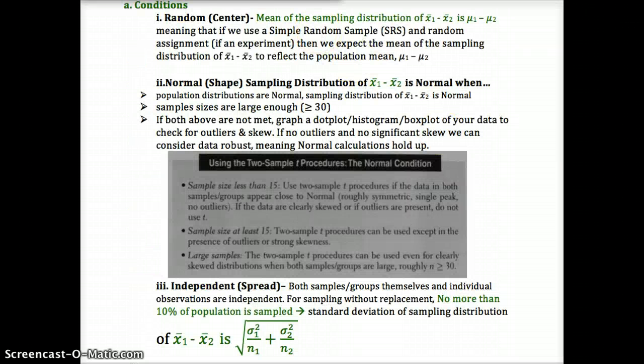Let's see what's involved with that, and then we'll come right back to the problem. A quick reminder about the conditions. We have random, which is the center. We need an SRS for both of the sampling distributions, so both of the samples that are taken.